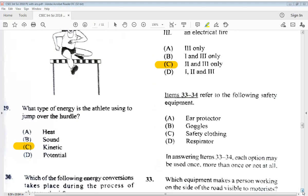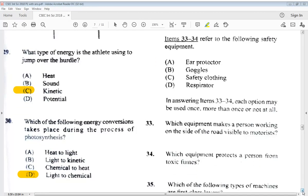Items 33 to 34 refer to the following safety equipment. A, ear protector, B, goggles, C, safety clothing, or D, respirator. In answering items 33 to 34, each option may be used once, more than once, or not at all. 33, which equipment makes a person working on the side of the road visible to motorists? We know that is C, safety clothing. 34, which equipment protects a person from toxic fumes? That is D, respirator.